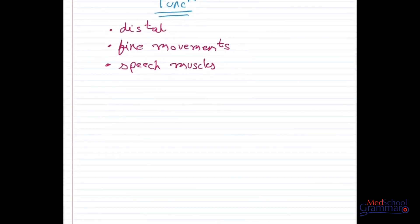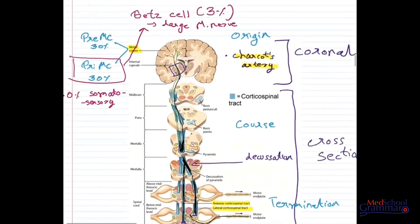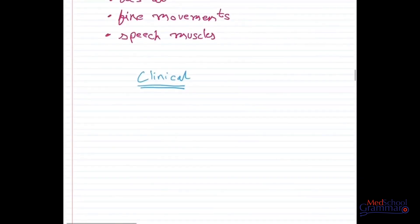Now let us move to the clinical aspect, which is very important. If there is a lesion due to hemorrhage of Charcot's artery at the posterior limb of the internal capsule, certain changes will occur. Fine movements will be lost, because the corticospinal tract controls fine movements and a lesion in it will cause their loss. Gross movements are not very markedly affected in a corticospinal tract lesion, since the tract does not primarily control gross movements.